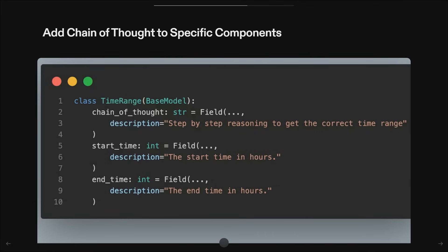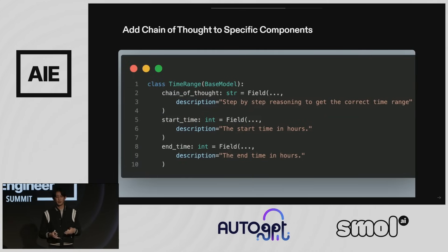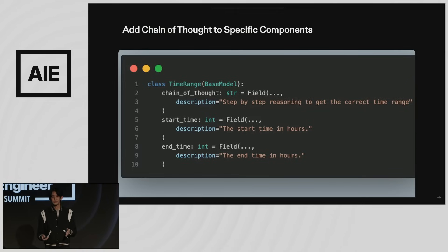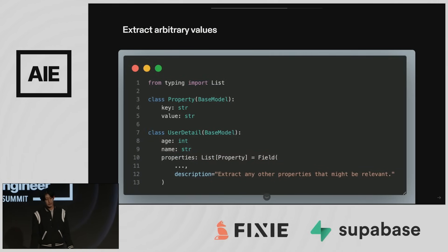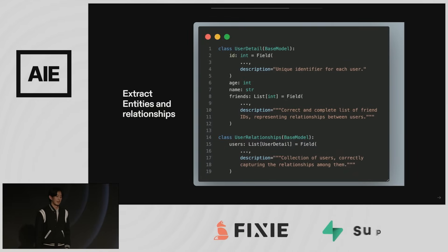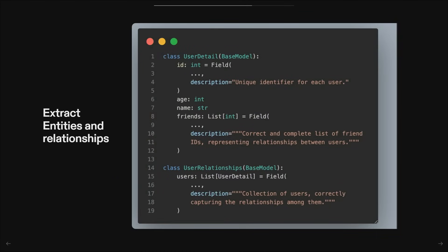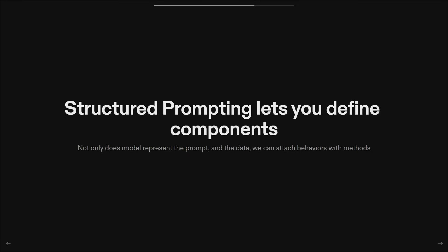You can imagine a system where in production you disable the chain of thought field, and in testing you add it to figure out latency or performance tradeoffs. You can also extract arbitrary values — define a property with a key and value, extract a list of properties, add validators to ensure consistency, and re-ask when they're not. You can also define ID and friends arrays to extract a social network from your data if you prompt it well enough.